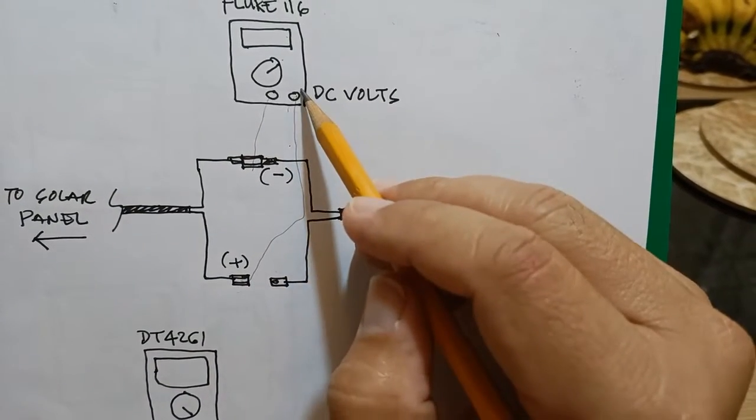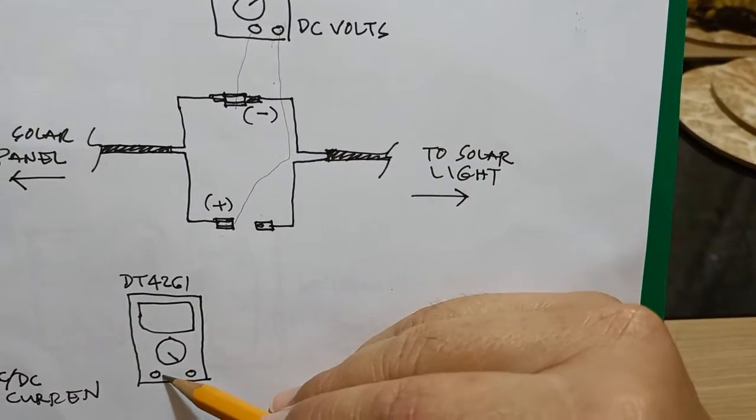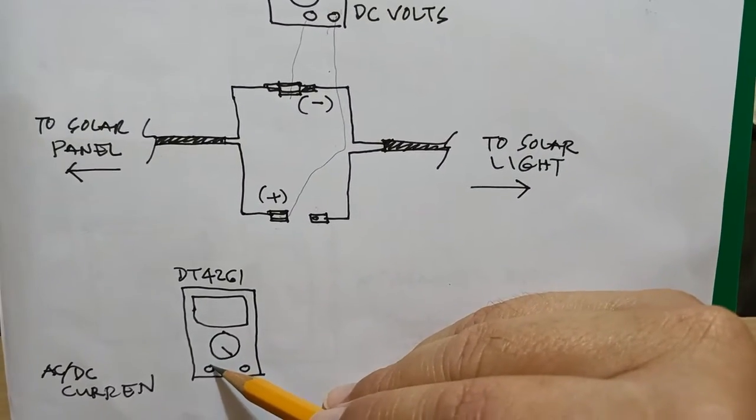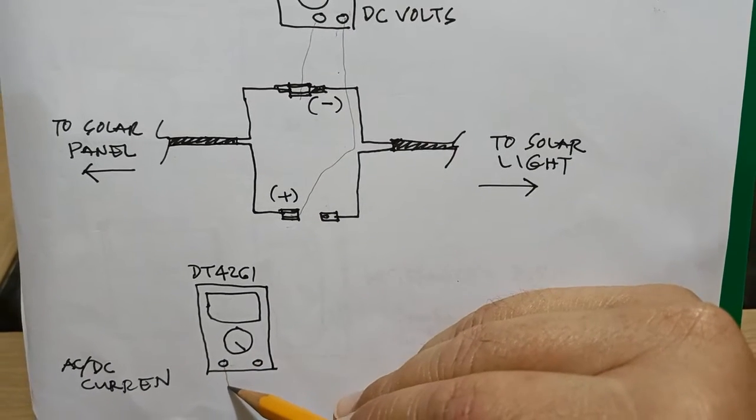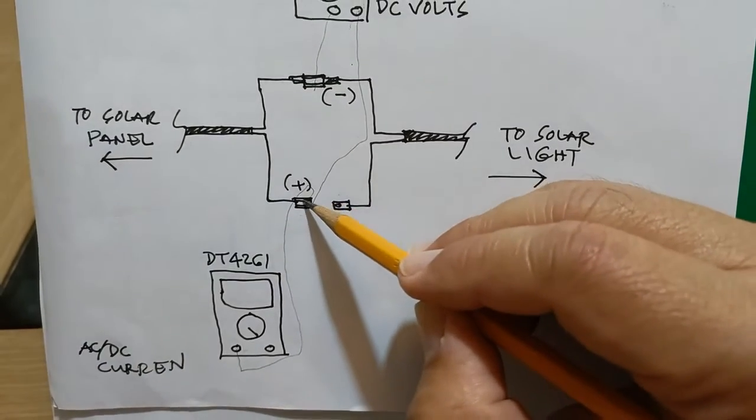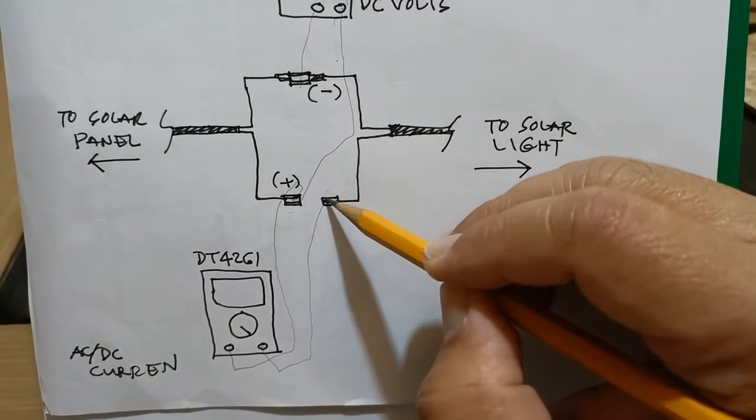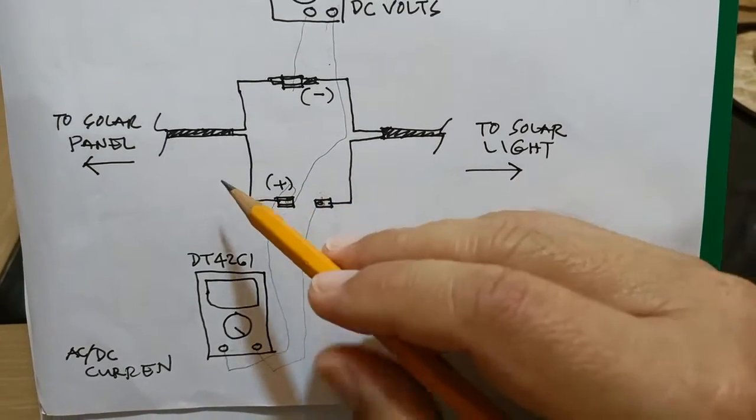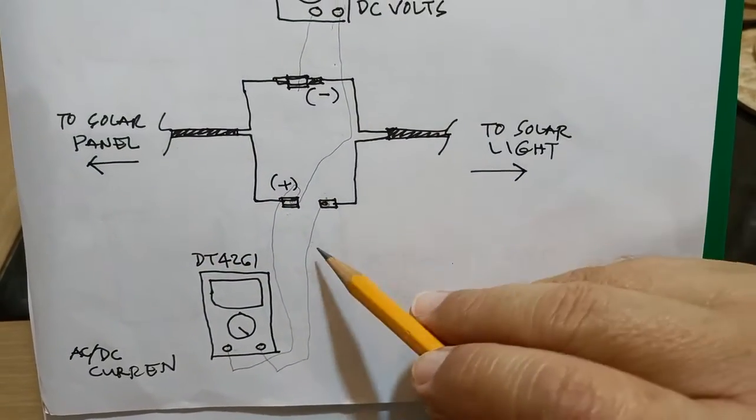The Hioki DT4061 which is set to measure AC and DC current will automatically detect DC current and this will be connected in series with the positive line in order to measure the charging current or the current going from the solar panel to the battery of the solar light.